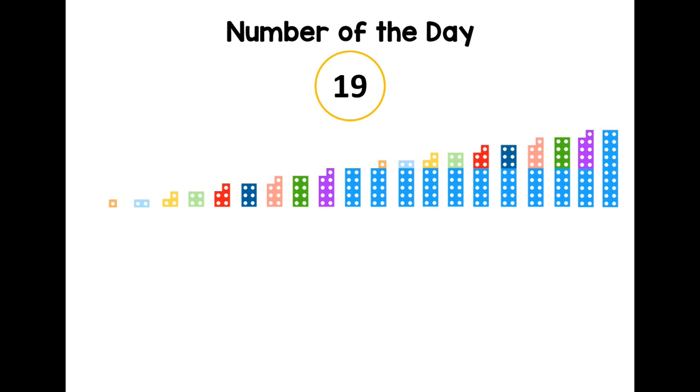On a number shape track, can you find the number 19? Can you point at it? Now remember we've looked at partitioning our numbers into tens and ones, so we need one ten and nine ones. So we need a ten and a nine.